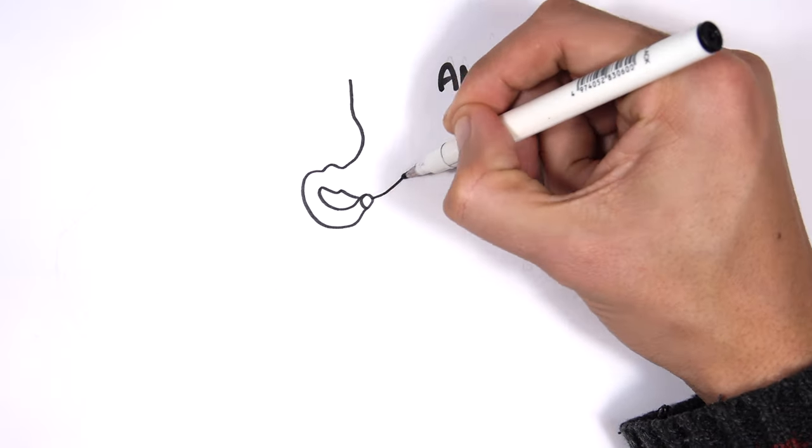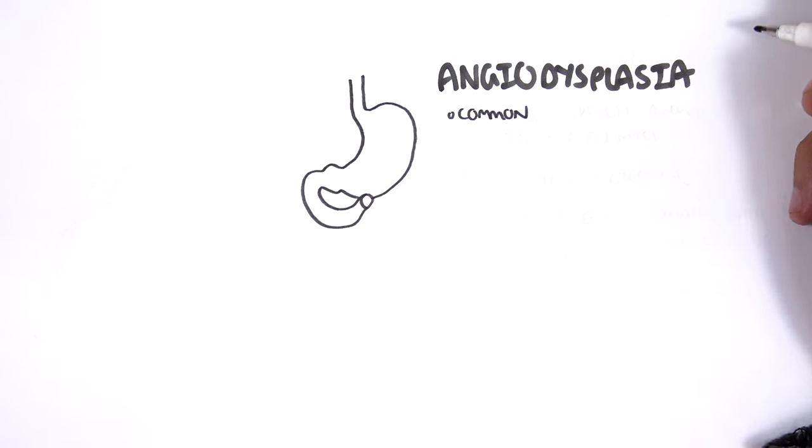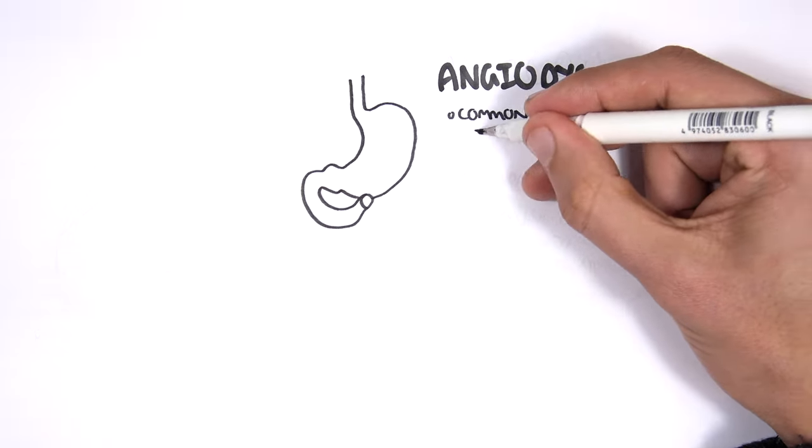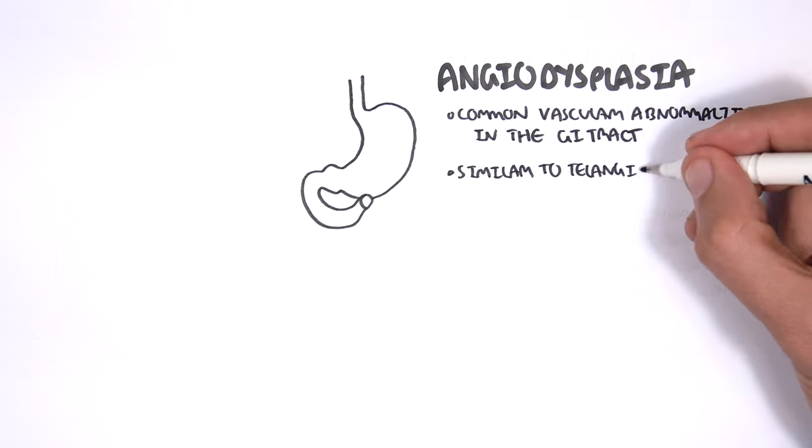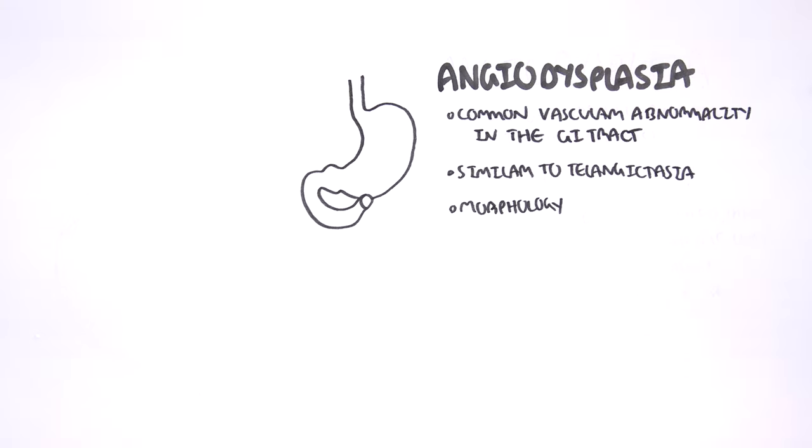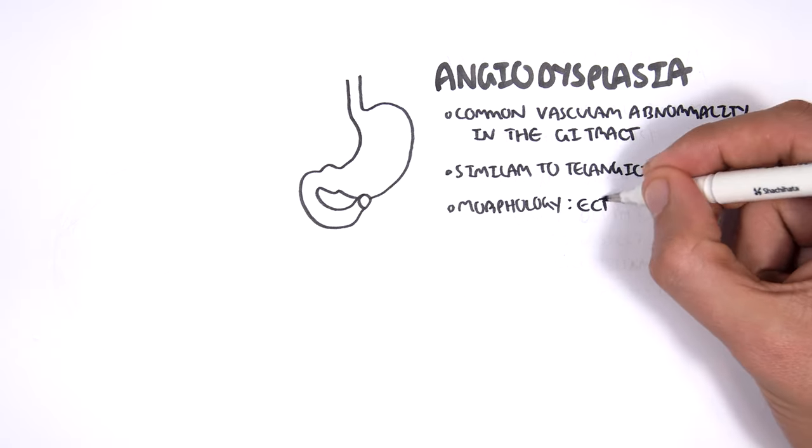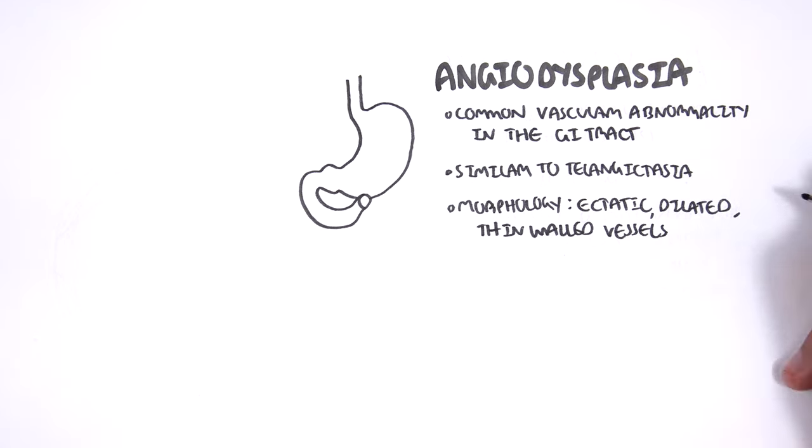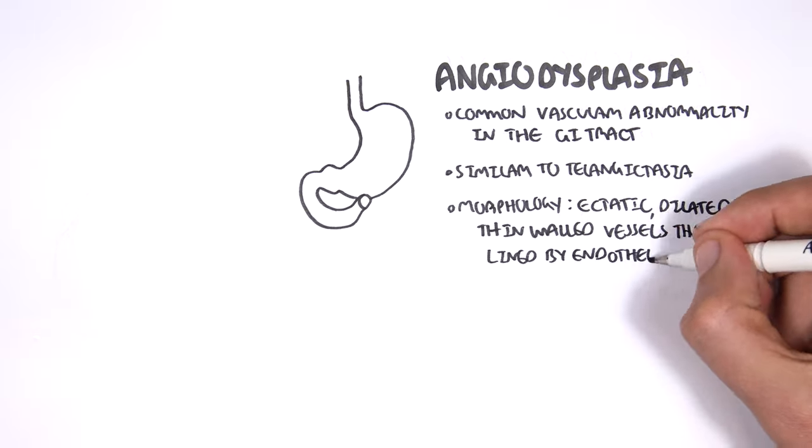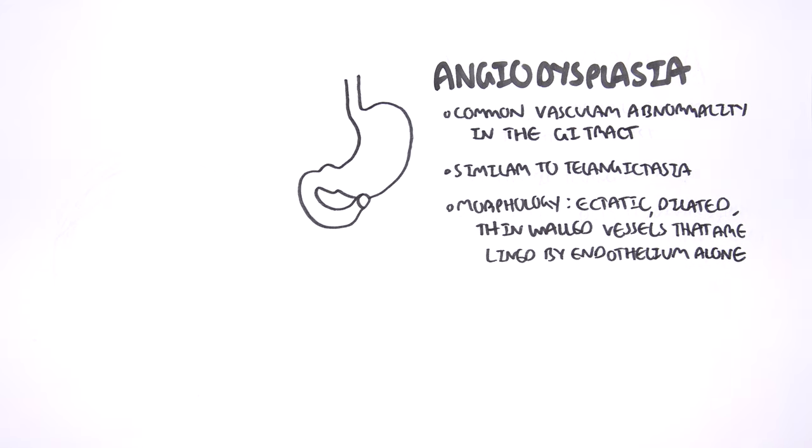The next potential cause of upper GI bleed is angiodysplasia, a common vascular abnormality in the GI tract. It's similar to telangiectasia and occurs all around the GIT, but mainly the colon. The morphology of angiodysplasia is that we have elastic, dilated, thin-walled vessels that are lined by endothelium alone. It's most often seen in the colon.